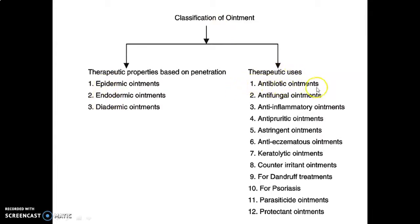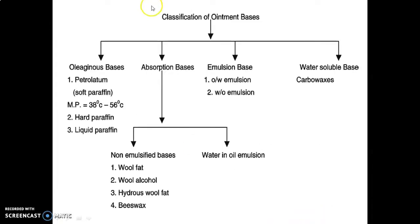Based on therapeutic uses, ointments include antibiotic ointments, antifungal ointments, anti-inflammatory ointments, antipruritic ointments, astringent ointments, antieczematous ointments, keratolytic ointments, counter-irritant ointments, ointments for dandruff treatment, for psoriasis, parasitic ointments, and protectant ointments. Next we will discuss the classification of ointment bases.